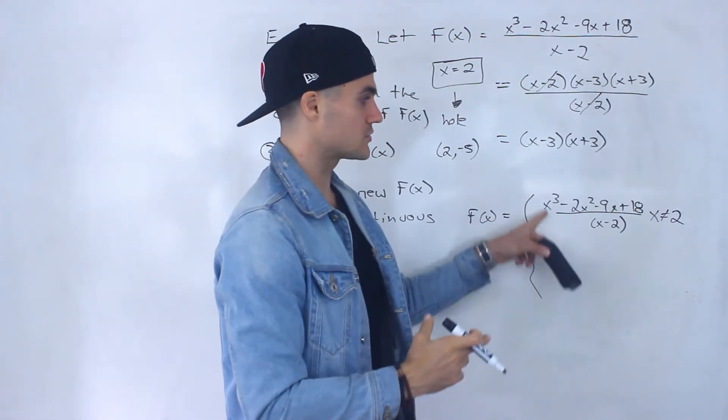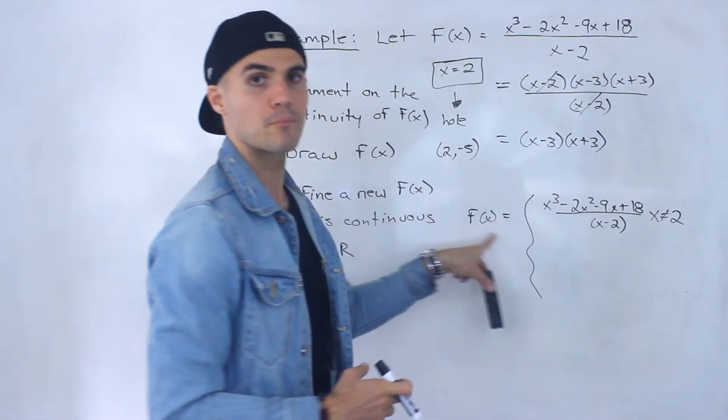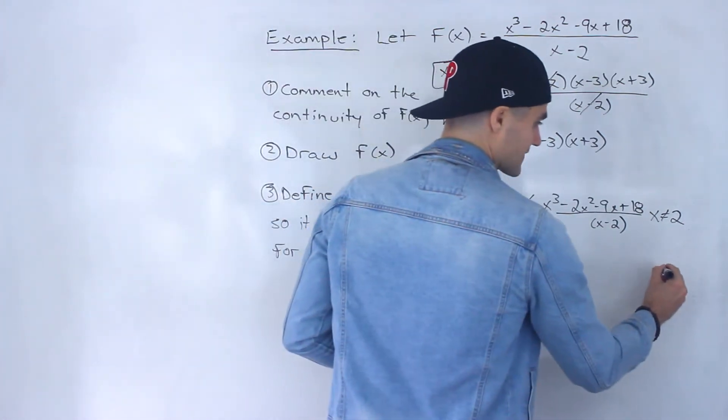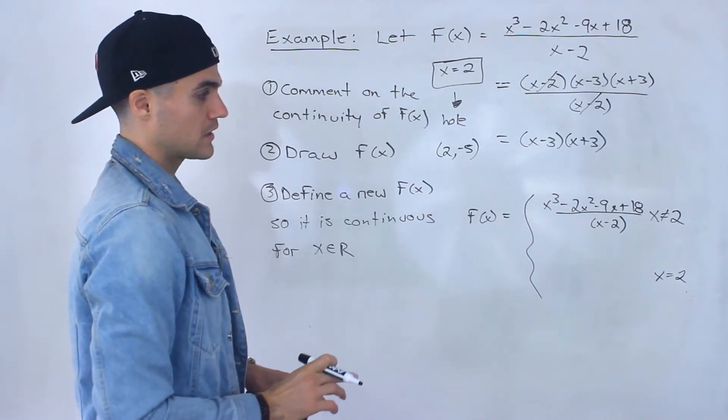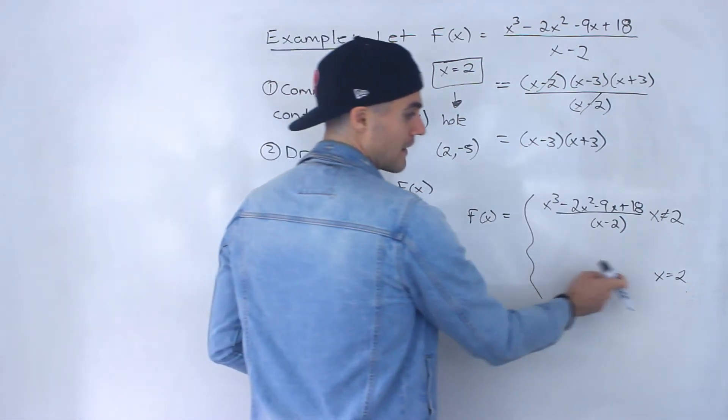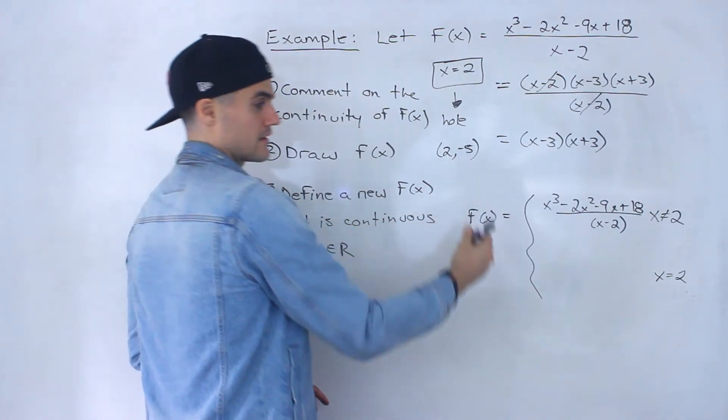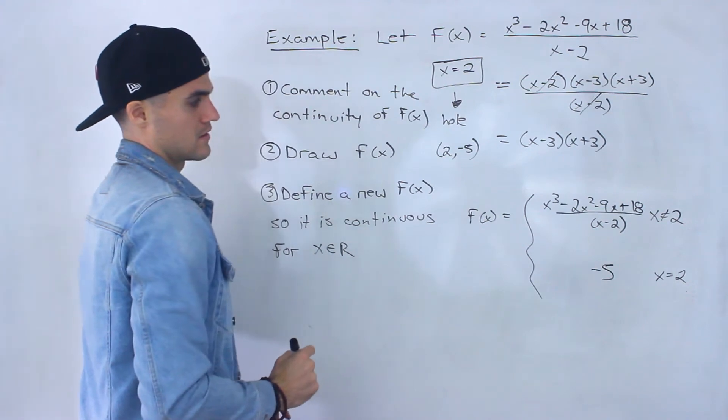Because for all x values not equal to 2, this function is going to be continuous. In fact, it's going to be that parabola that I showed you. The problem is is that that x value of 2, there's going to be a hole there. So what we can do is we can just define a y value at that x value of 2, and the y value we want to define is negative 5.